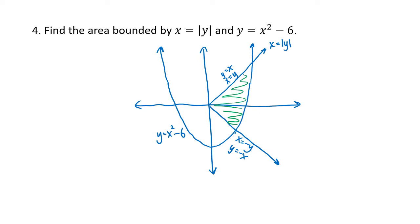We can slice vertically or horizontally, and both have some complications. If we slice vertically, there's a changeover point where which function is on top switches. To the left of that line, the two parts of the absolute value function are the top and bottom. To the right, the top half of the absolute value function is on top but the parabola is on the bottom. So slicing vertically requires two separate integrals.